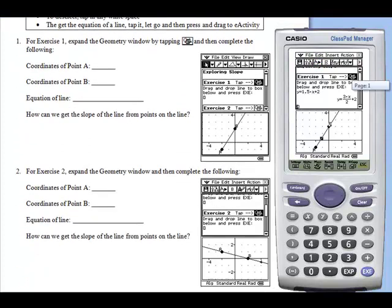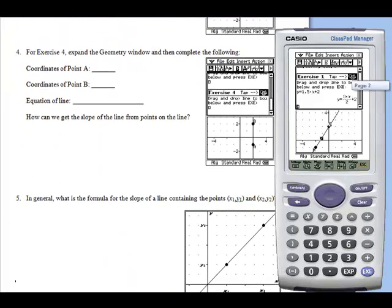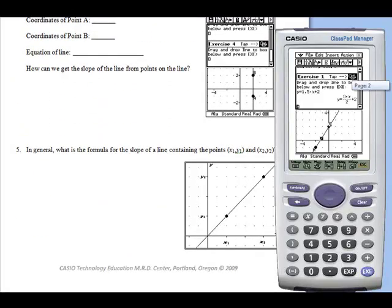The activity comes with four different exercises for students to complete, and then they consider the equation for the slope of a line given any two points.